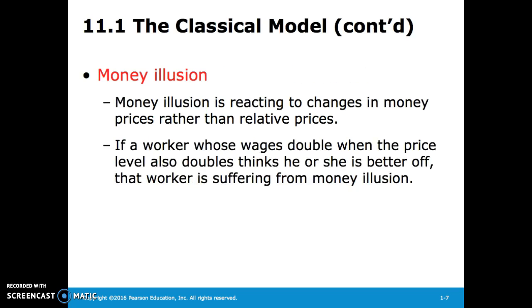Money illusion is reacting to changes in money prices rather than relative prices. For instance, if a worker's wages double and they think they're better off, despite the fact that price levels also double, that worker is suffering from money illusion.